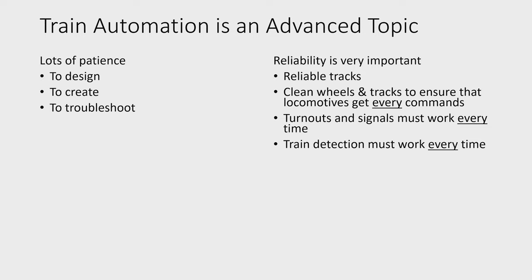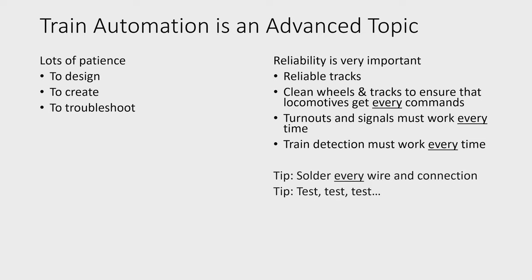Some train detection methods, for example when you use the contact tracks, actually require the wheels to be clean as well. As a tip, I would encourage you to at least avoid things that can go wrong from the electrical side: solder every wire, solder every connection, make sure they're secure, make sure that the cabling is correct. And then test, test, test and test again.